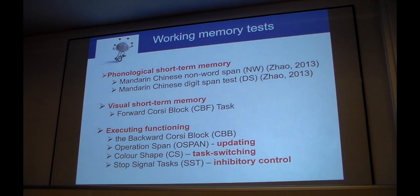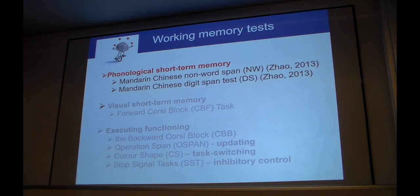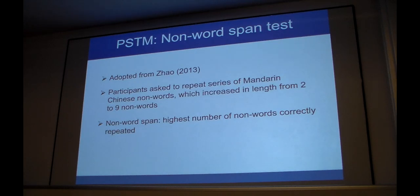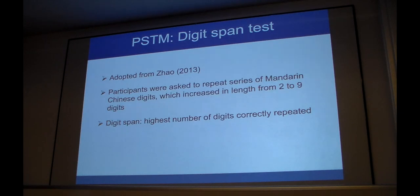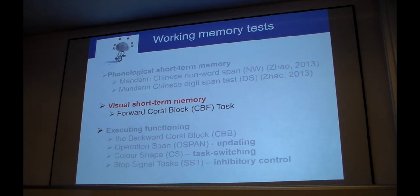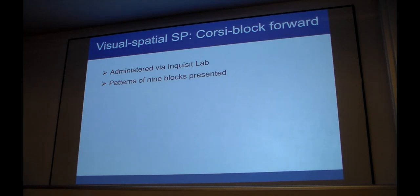When it comes to working memory tests, we had tests of phonological short-term memory, visual short-term memory, and also executive functioning tests: a test of updating ability, task switching ability, and inhibitory control. Let me explain in detail what these tests were. Our phonological short-term memory tests, one of these was a non-word span test, adopted from Zhao's work. What participants had to do is repeat a series of Mandarin Chinese non-words, which increased in length from two to nine words. And participants' non-word span was specified as the highest number of non-words they were able to repeat correctly. The digit span test had a similar format, but this time participants were asked to repeat digits instead of non-words. This was also administered in Mandarin.